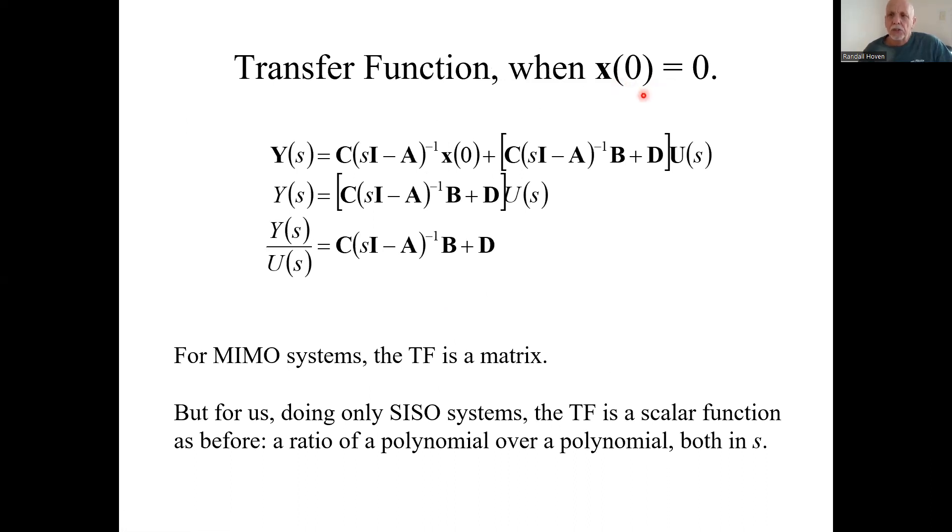When the initial state is zero, but u is something, now here's what y was. But if this initial state is zero, this term goes away. I'm just left with that term. Well, that gives me a transition matrix. This is the transfer function. It gives me a transfer function. Here's the transfer function, which in general is a matrix. We're only going to do it for single input, single output systems, though. So this is going to be a good old transfer function, the ratio of a polynomial over a polynomial in s.